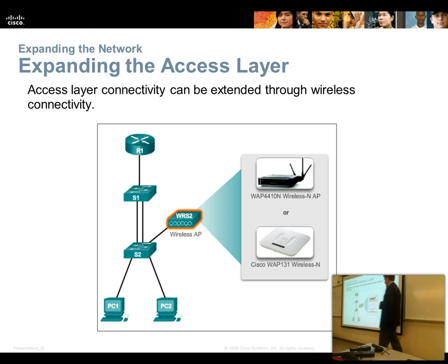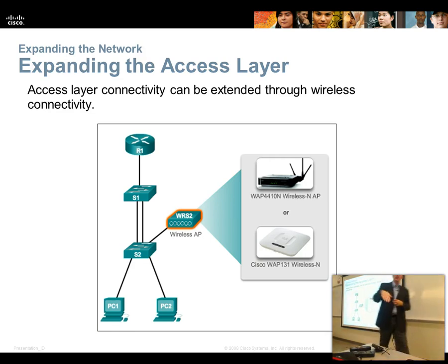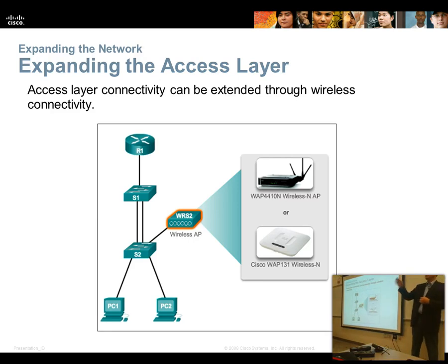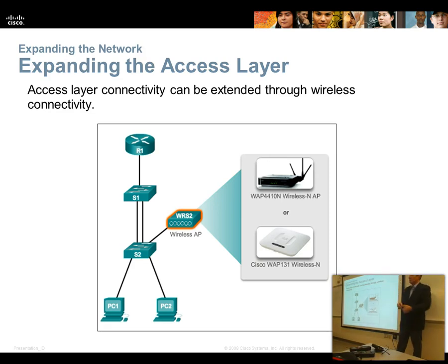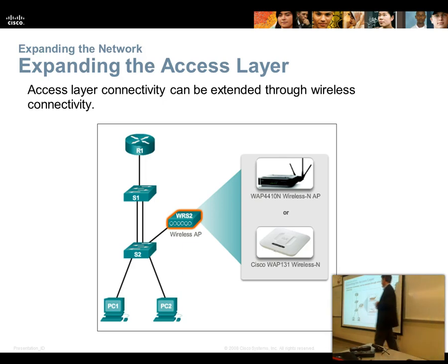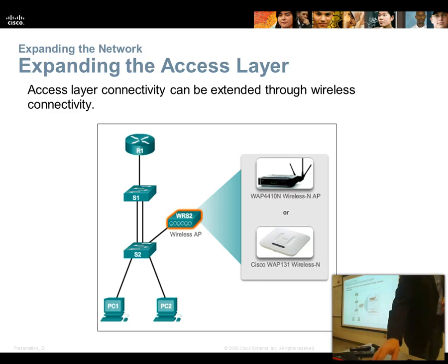We can also expand the access layer with access points connected into it, dealing with trunking and multiple paths. We might have an SSID — that's the wireless network name you type in when you browse and connect to a wireless network. You might have one for public and one for employees, so an access point could be capable of delivering two SSIDs with different security requirements and different frequencies.